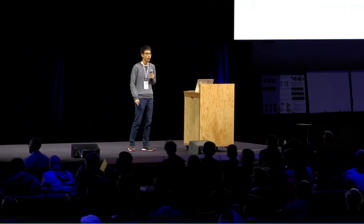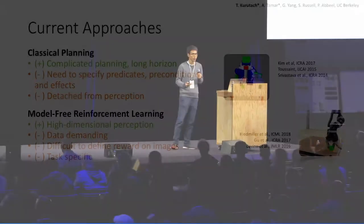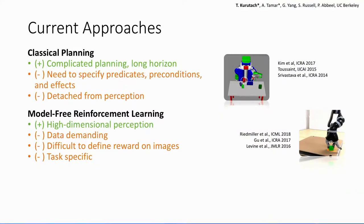Model-free reinforcement learning, on the other hand, can handle complex inputs such as images. It is difficult to use because it requires a lot of data, and you also need to specify the reward function on images, which is very challenging.